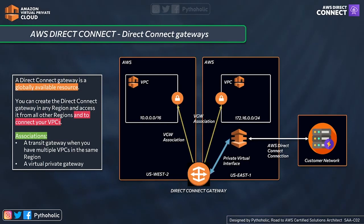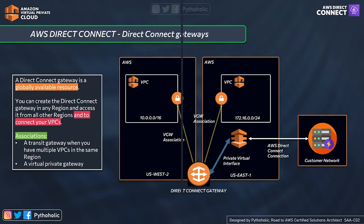When setting this up, choose the VPCs to associate, ensure virtual private gateways are created for those associations, then create your Direct Connect Gateway. One critical point: the Direct Connect Gateway is not transitive. Even if VPCs are associated with the same Direct Connect Gateway, they cannot use it to communicate with each other through their virtual private gateways. It is intended solely to connect your on-premise network to the AWS cloud, not to enable VPC-to-VPC communication.